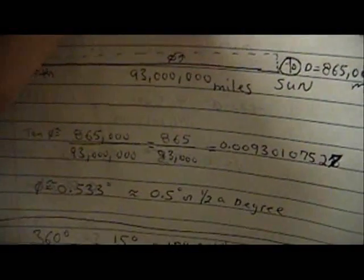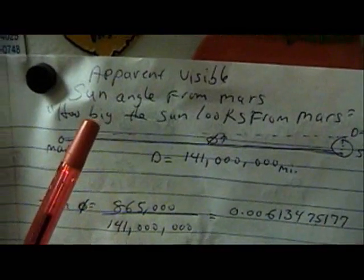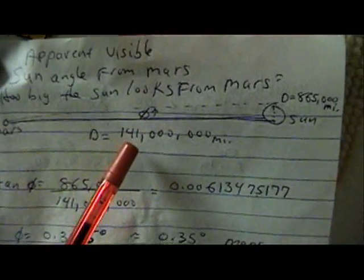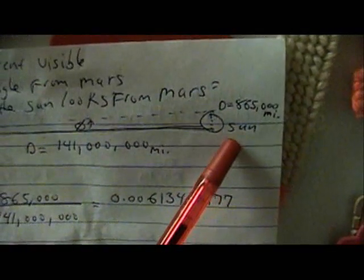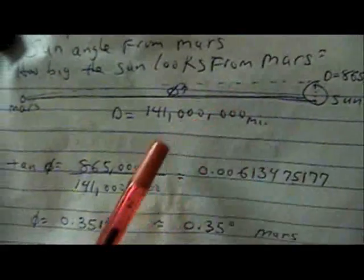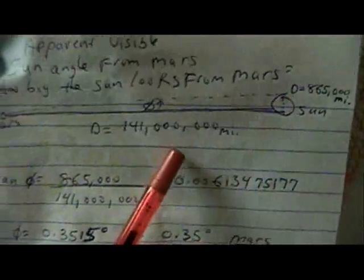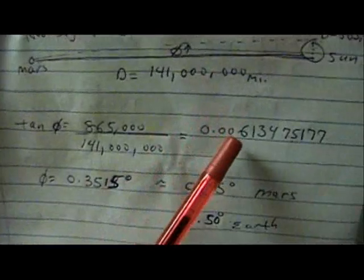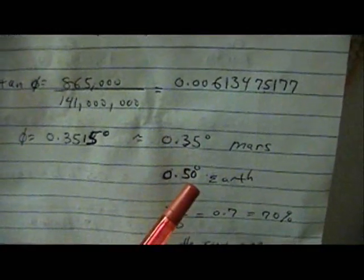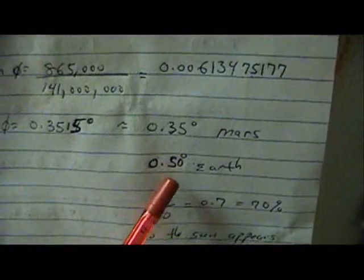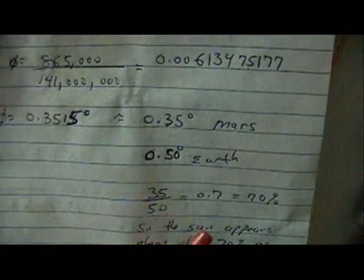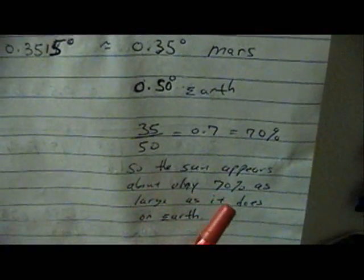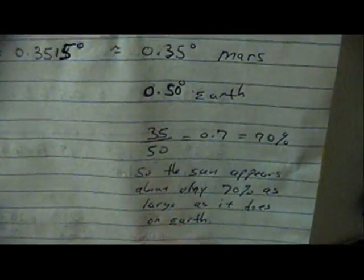Now this is the apparent visible angle that the sun is from Mars. The distance is 141 million miles and the diameter of the sun is the same at 865,000 miles. If you divide this by this, you get the tangent of this angle, and the angle is the inverse of that — it's 0.35 degrees. On Earth it's about 0.5 degrees, so the ratio of 35 to 50 is 0.7. That means the sun appears to be only about 70% as large from the surface of Mars as it does on Earth.